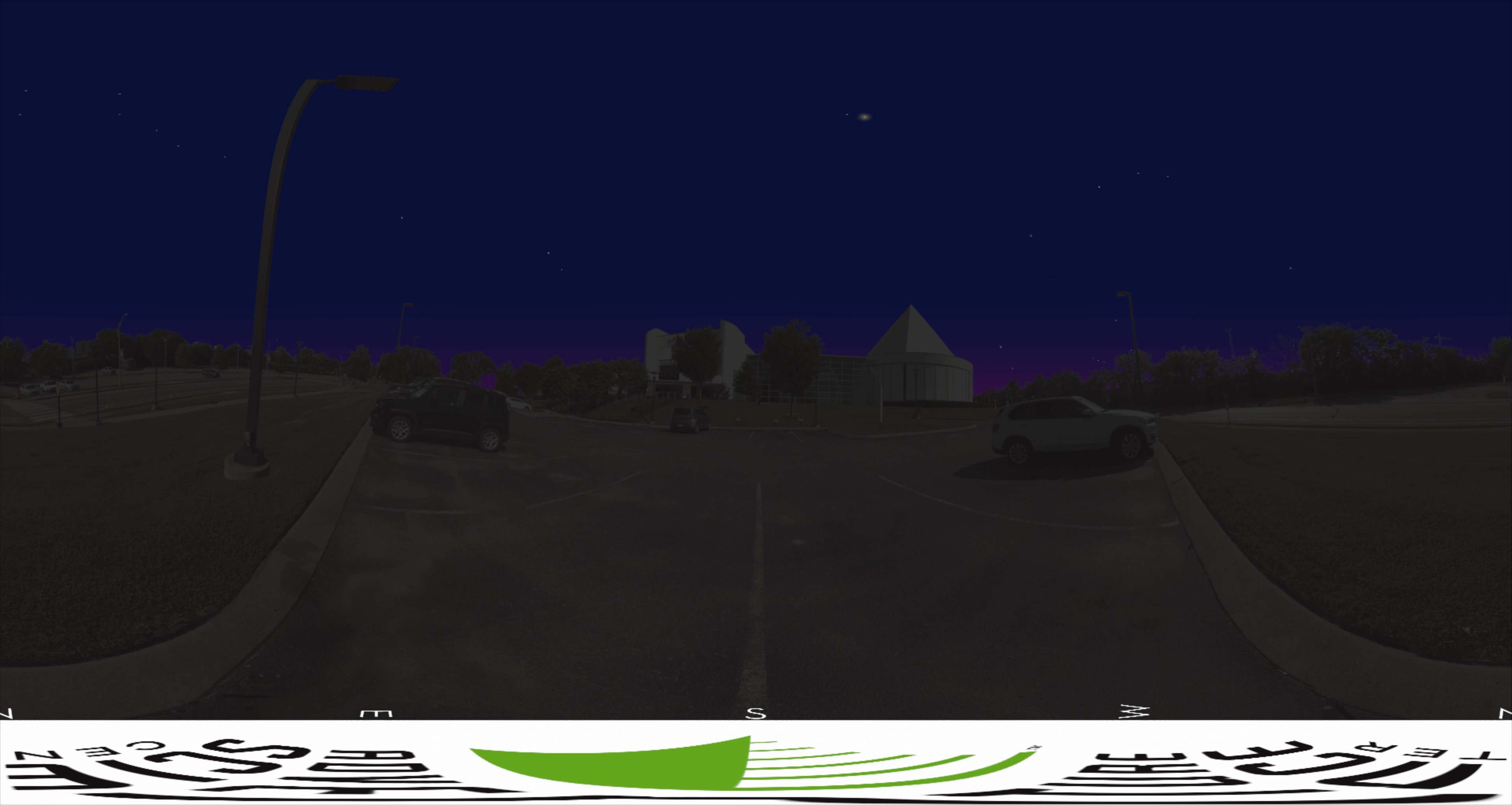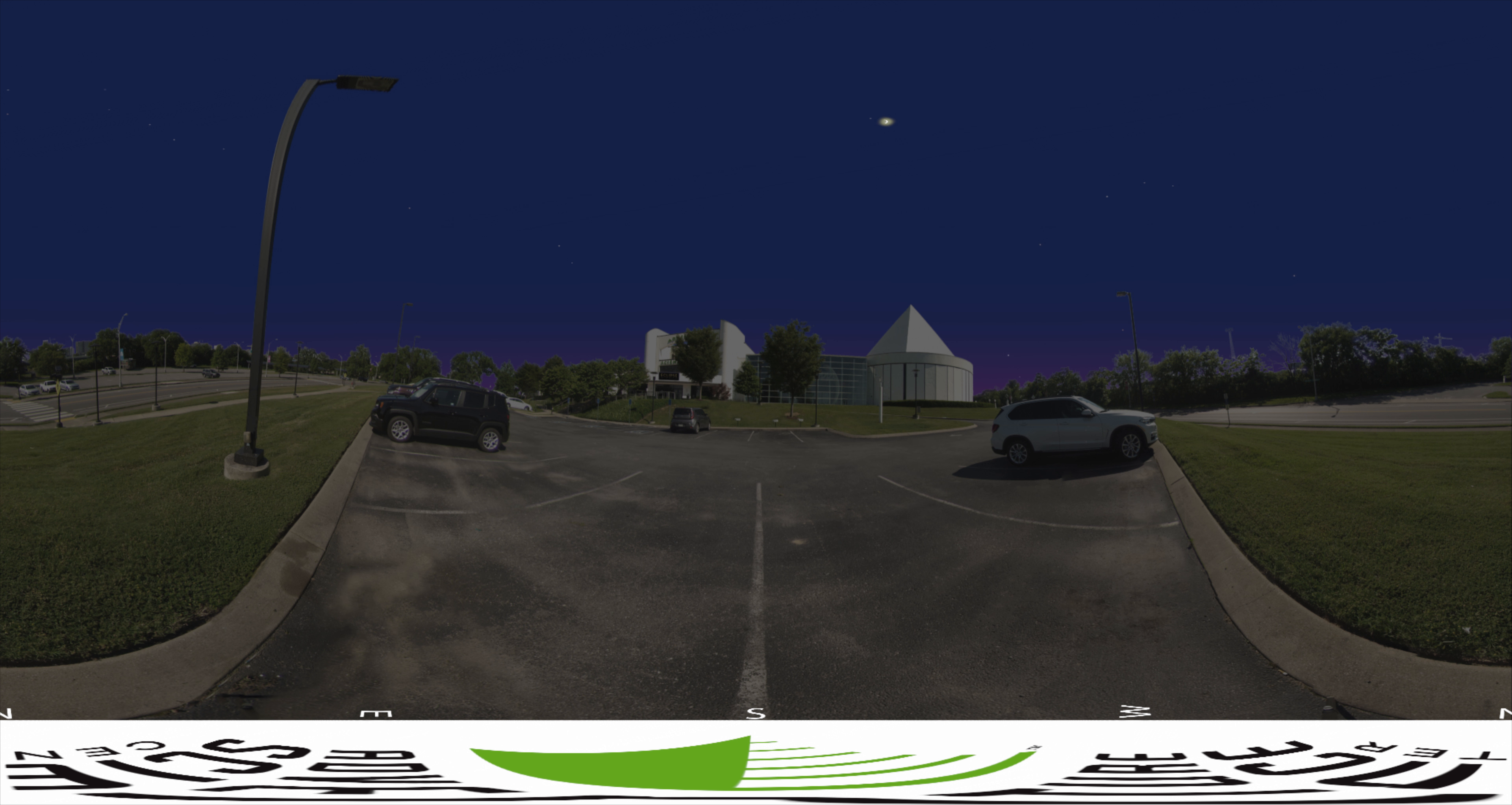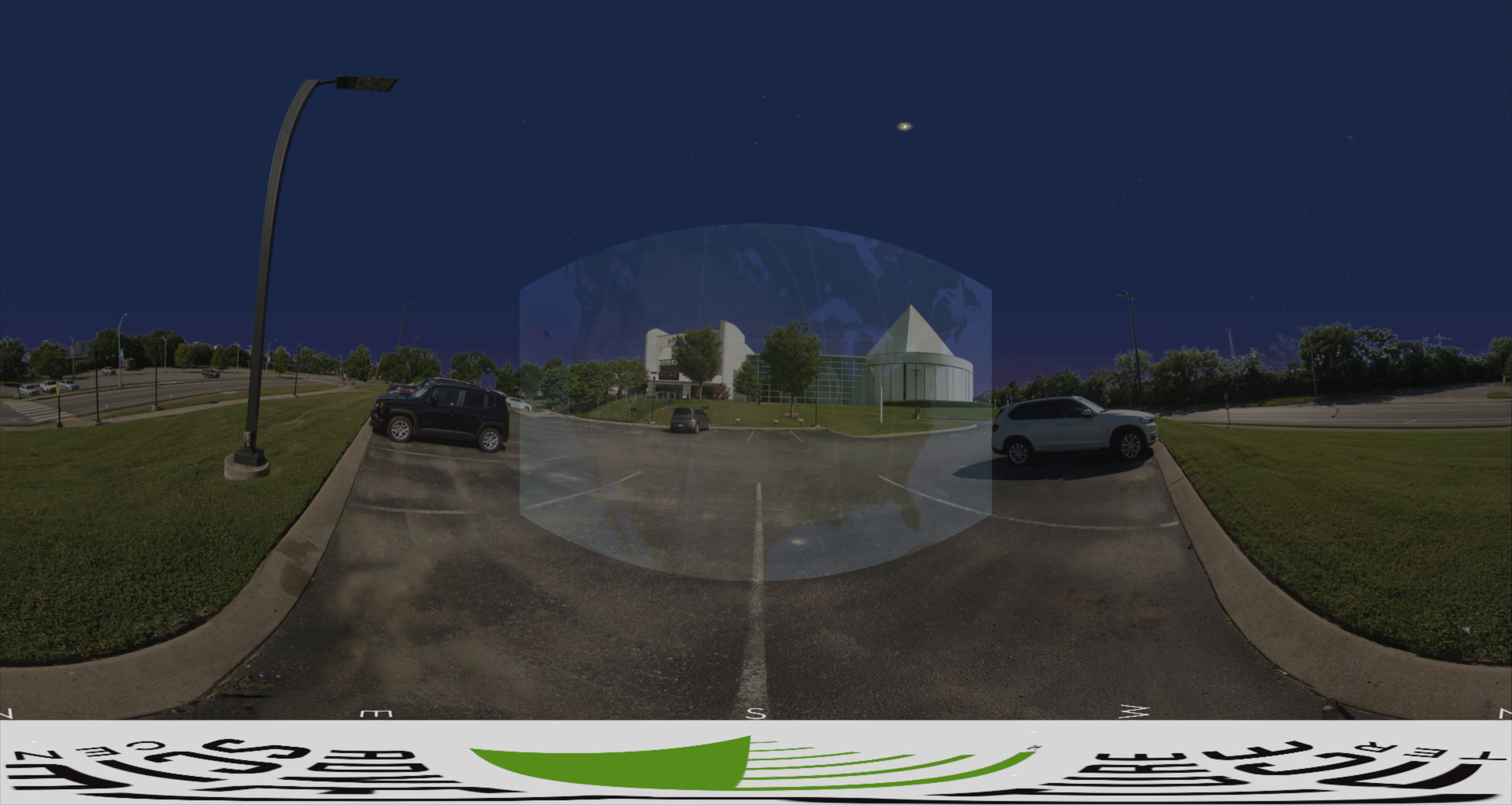But that experience will be brief. As the moon continues orbiting Earth, it will begin to uncover the sun. As soon as even the tiniest part of the sun comes back into view, you'll need to put those solar glasses back on to look at the sun. The total solar eclipse of August 21, 2017 will be over.